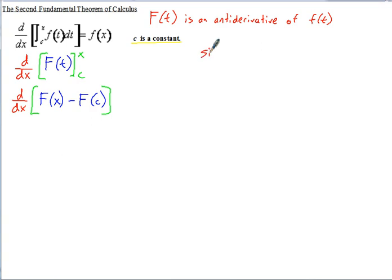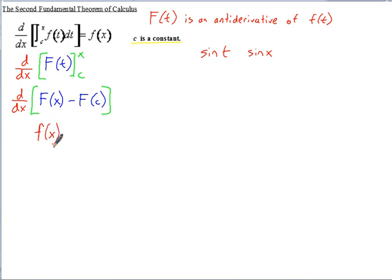That's like the difference between sine(t) versus sine(x) — the same function, just a different variable inside. So the derivative of capital F(x) is lowercase f(x). Minus the derivative of capital F(c) — remember, c is a constant, so plugging a constant into a function just gives you some other constant. The derivative of a constant is zero. So we just end up with f(x).